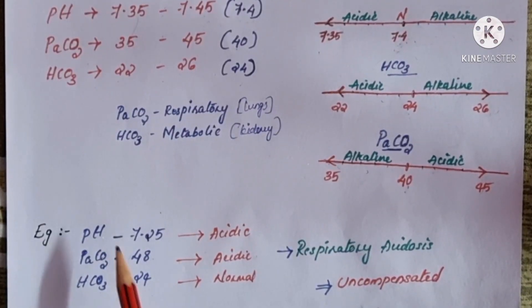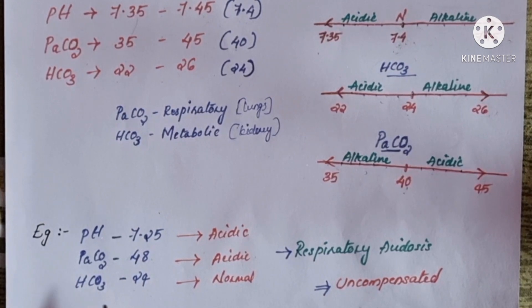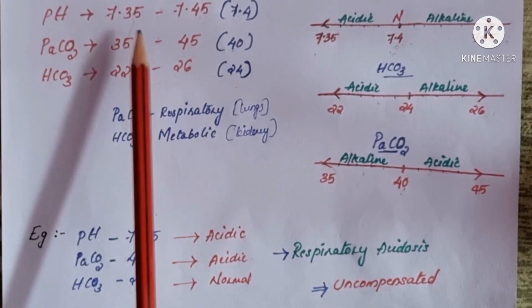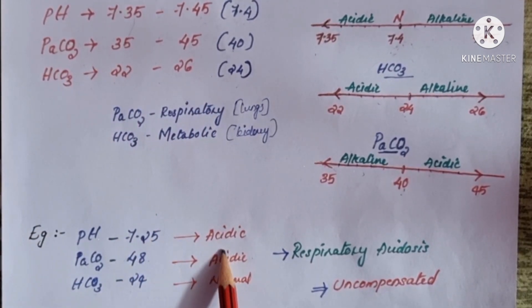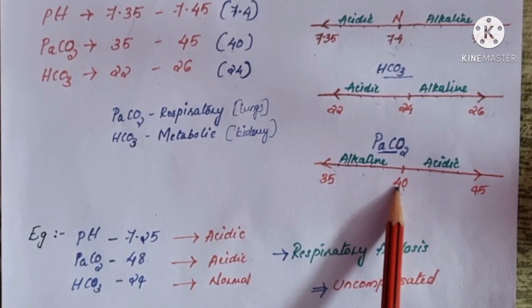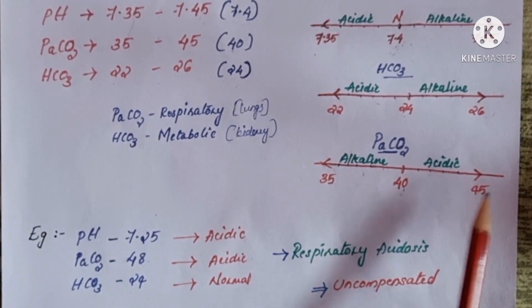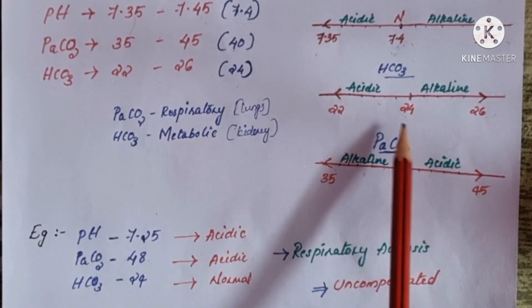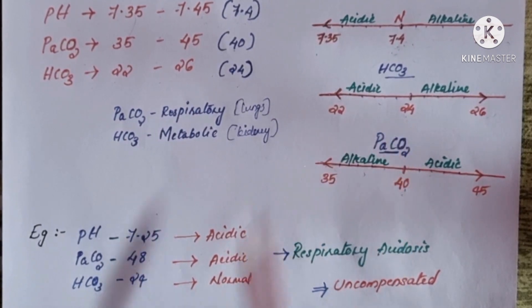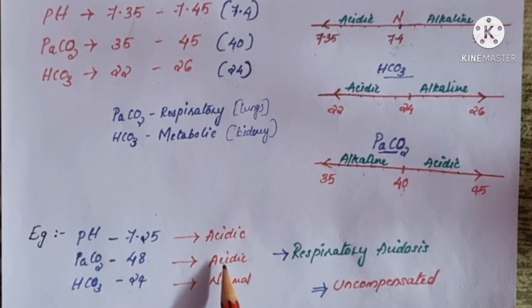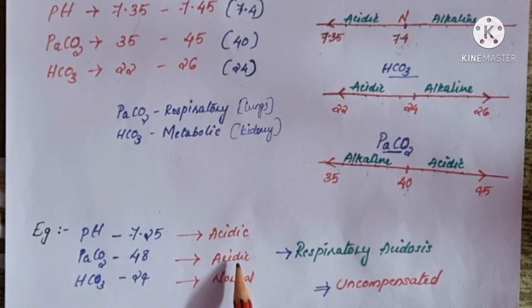Here is an example: pH is 7.25, PaCO2 is 48, and bicarb is 24. The normal pH range is 7.35 to 7.45, so pH 7.25 is below that — it is acidic. PaCO2 is 48, which is above the range of 35–45, so PaCO2 is acidic. Bicarb is 24, which is normal. Since both pH and PaCO2 are acidic, and PaCO2 is related to respiratory, this is respiratory acidosis.